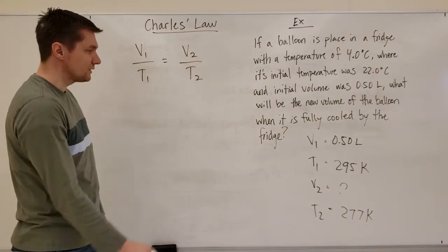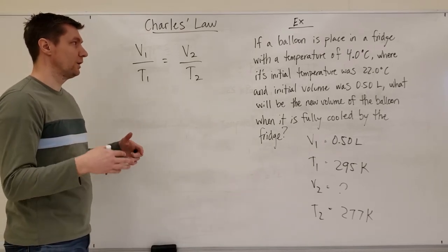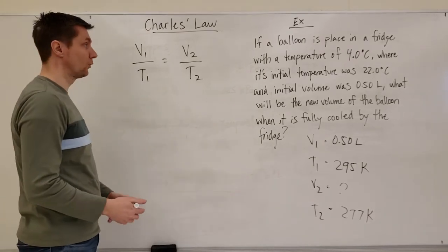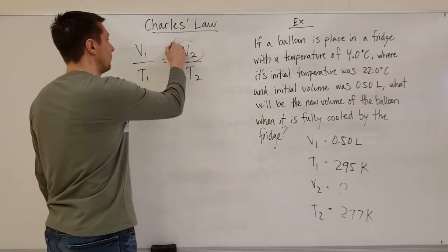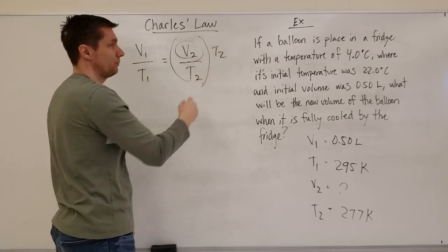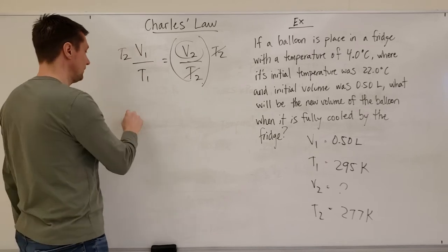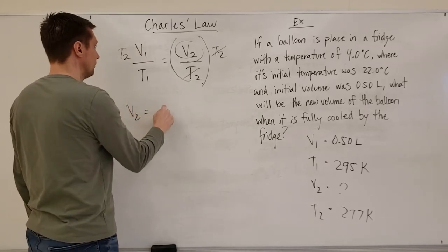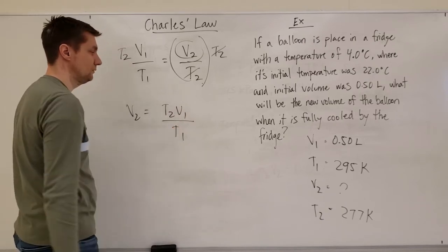So I take these numbers now and plug them into my formula, but before I do that I want to rearrange the formula so I'm solving for V2. I've got T2 on the bottom here and V2 is what I'm looking for. So if I'm dividing by T2 to get rid of that I have to multiply by T2, and what I do to one side I have to do to the other. So V2 is equal to T2 times V1 divided by T1.